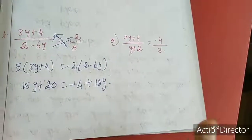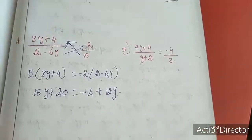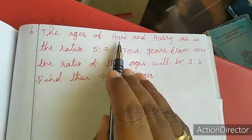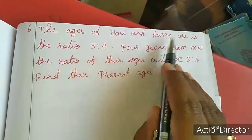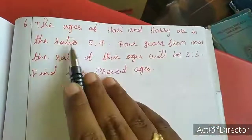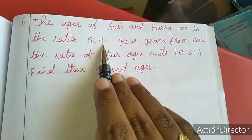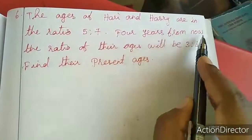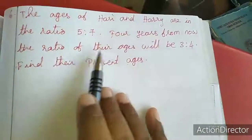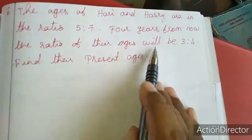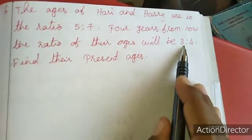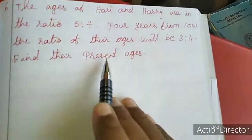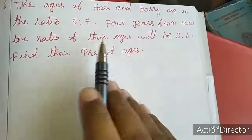Now we will move to the 6th sum. The ages of Hari and Hari are in the ratio 5 is to 7. Four years from now, the ratio of their ages will be 3 is to 4. Find their present ages.